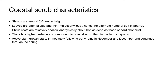The shrubs in Coastal Scrub tend to be between two and six feet tall. Their leaves are often pliable, thin, and quite soft — the botanical term for this is malacophyllous. This characteristic of soft leaves gives Coastal Sage Scrub its alternate name of Soft Chaparral. The roots of plants in Coastal Scrub are relatively shallow, typically about half as deep as those of Chaparral.